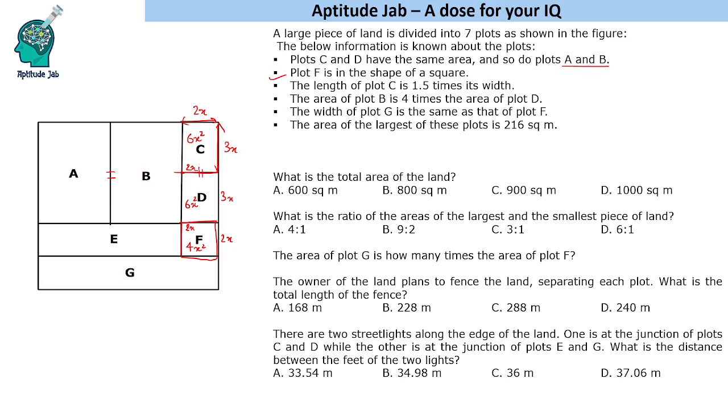A and B have the same area and we are given that plot B is 4 times that of plot D. So, this area is 24x square and this is also 24x square. Now, this distance from this point till this point is 6x. So, this length is going to be 4x because it is 4x into 6x. So, this is 24x square. This is also 24x square.